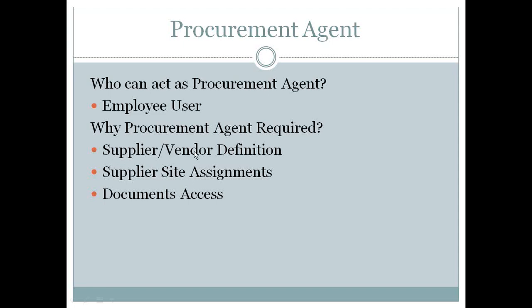The supplier and vendor can be created by any user, but the supplier address can be created only by a procurement agent, and the site can be assigned to the specific business unit for which that user is defined as a procurement agent. For example, if you have 10 business units but one procurement agent defined for BU1, that agent can only assign supplier sites to BU1.